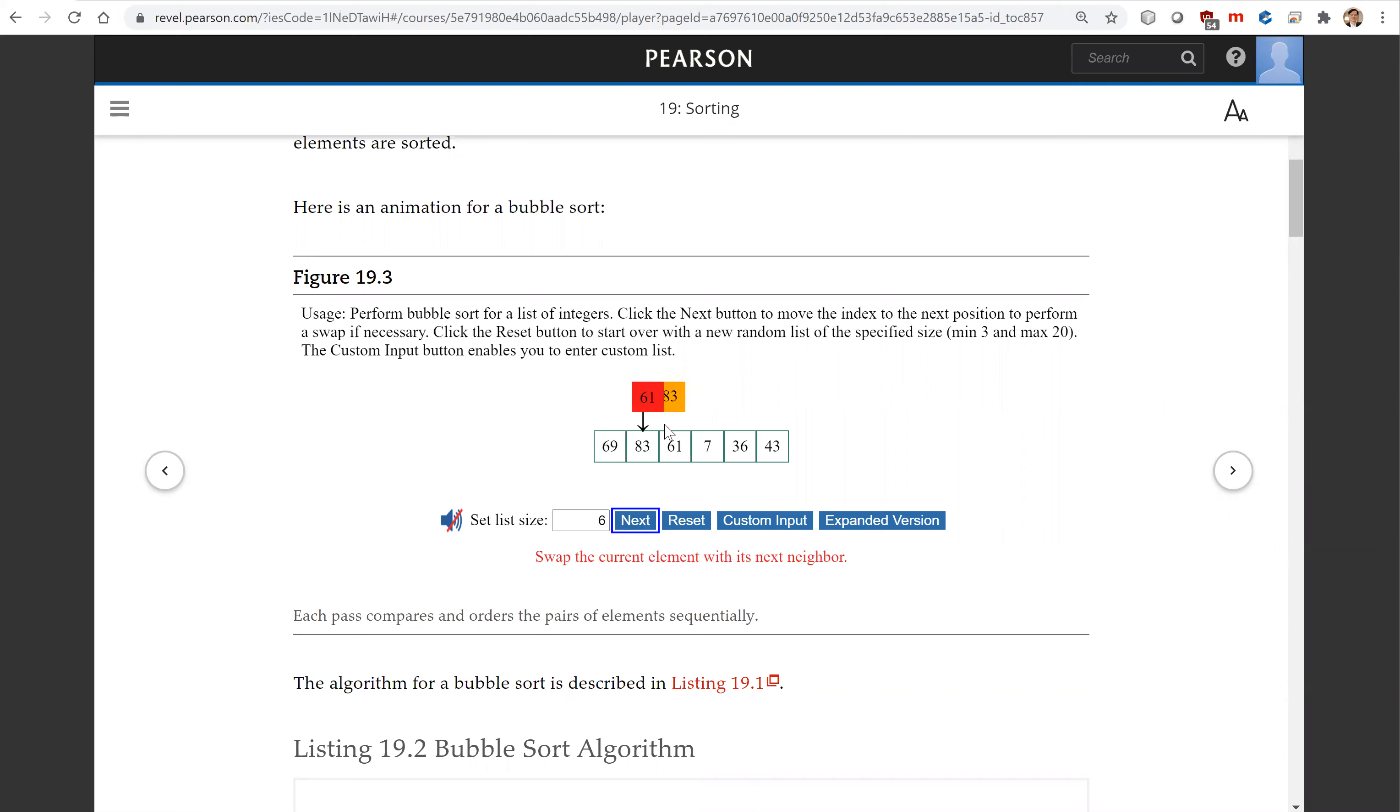And now the next 61, 83 and then next 83, 7 swap. And the next one swap and swap. So that's one pass. At one pass the largest element is at the bottom.